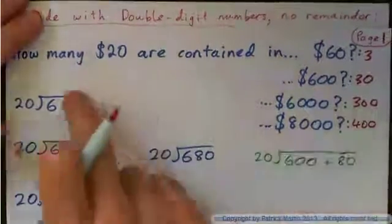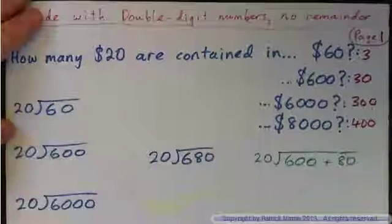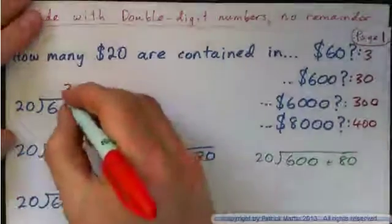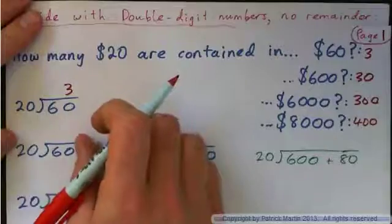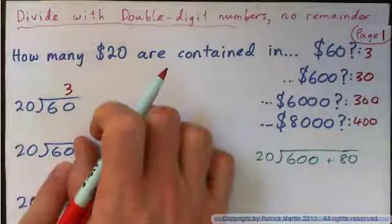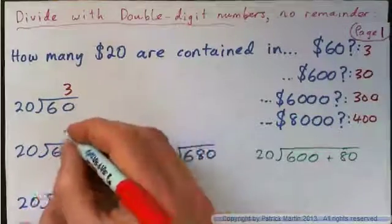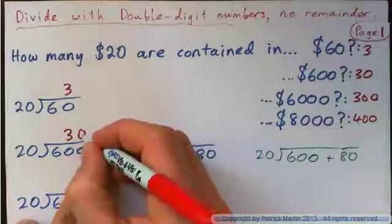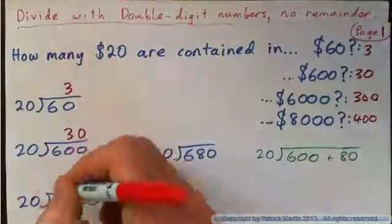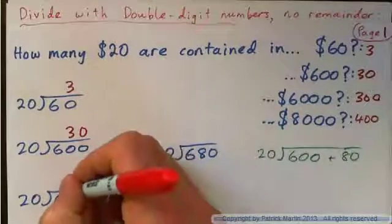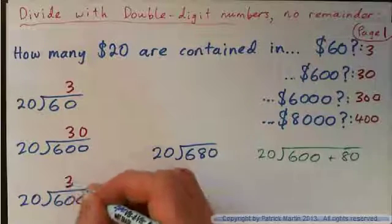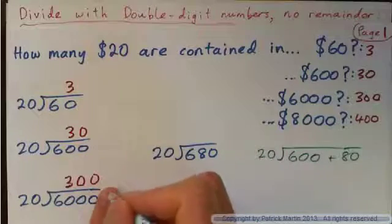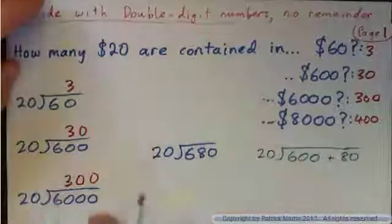Here's some straightforward dividing by 20. $20 into $60 — there are three of them. $20 into $600: you go $20 into $60, which goes three times, then $20 into $0, zero times — so that's 30. $20 into $6,000: $20 into $60 is three times, $20 into $0 zero times, $20 into $0 zero times — giving 300. This is dividing by a double digit.